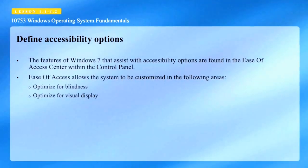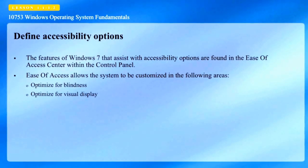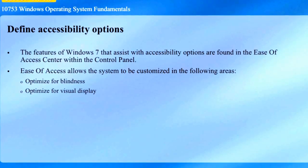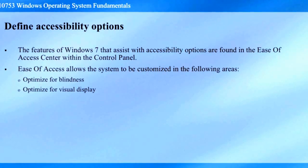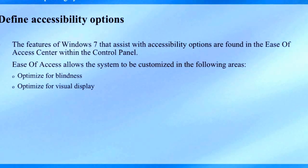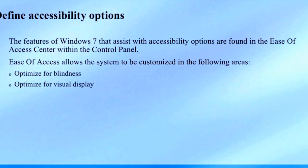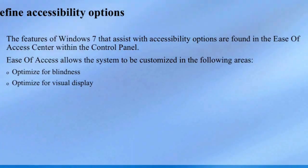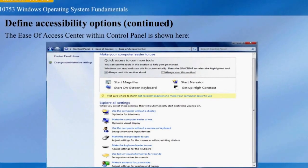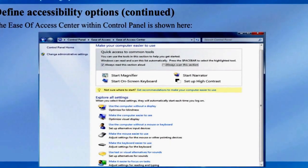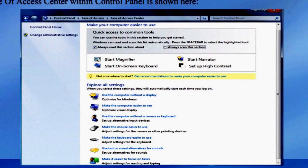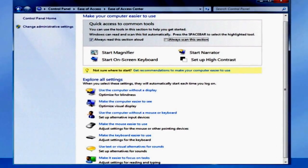Accessibility options are features of Windows 7 that assist with accessibility, found in the Ease of Access Center within the Control Panel. The Ease of Access Center allows the system to be customized — for example, optimizing for blindness configures the operating system with a narrator function to help users who cannot see the screen. Optimizing for visual display uses the magnifier to configure the computer so that it is easier to see. The Ease of Access Center can be accessed by clicking Start, selecting Control Panel, Ease of Access, and then Ease of Access Center.